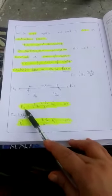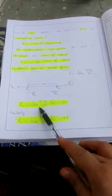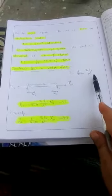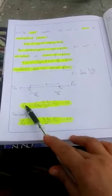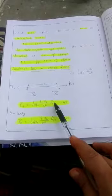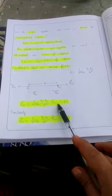f2-1 can be written as 1 upon 4 pi epsilon 0 q1 q2 upon r square. As here we have written force in term of vector, this side should be vector. We will use unit vector to give the direction.